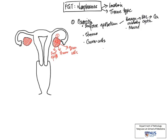The main histologic types would be mucinous tumors, serous tumors, and clear cell tumors. So it is very important for clinicians to decide whether they are malignant or at the benign end of the spectrum.